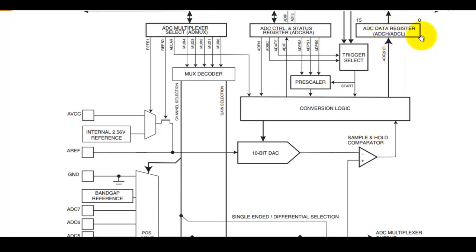If the result is left-adjusted, the upper 8 bits will be stored in ADCH and the lower 2 bits will be stored in ADCL. This adjustment can be selected using the ADLAR bit of the ADMUX register.